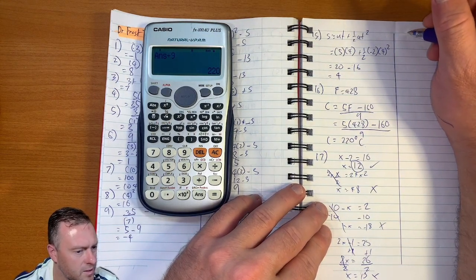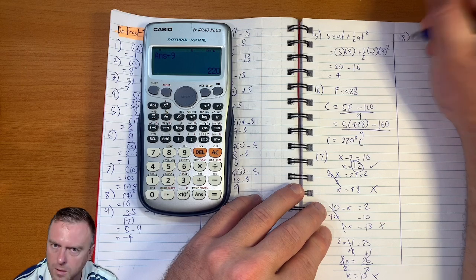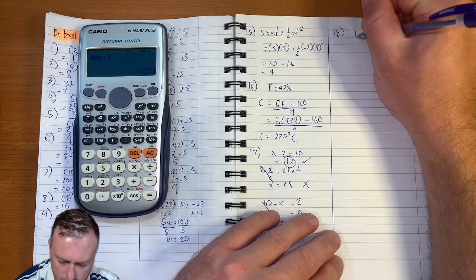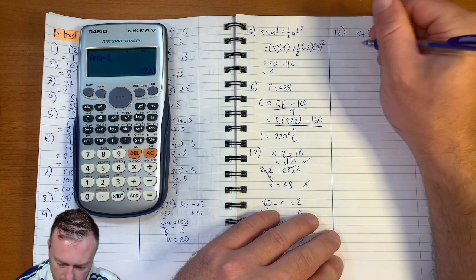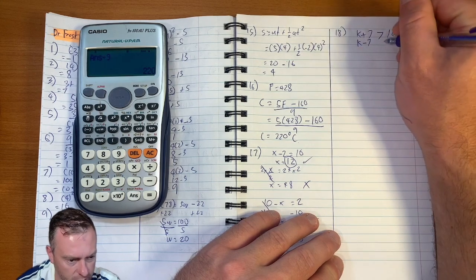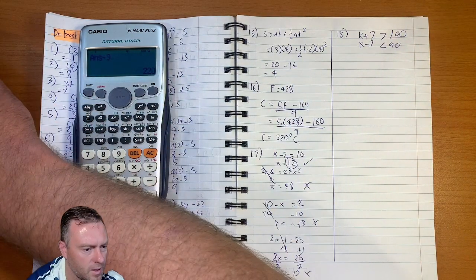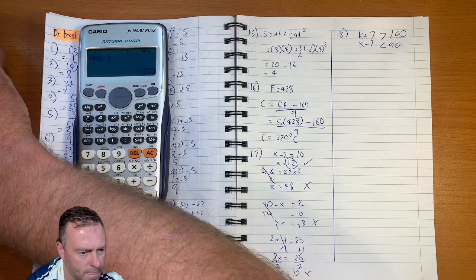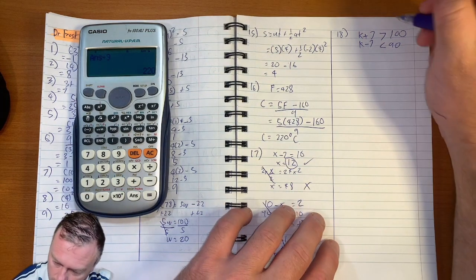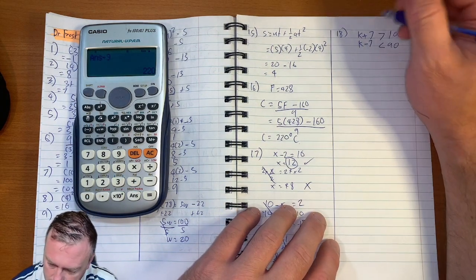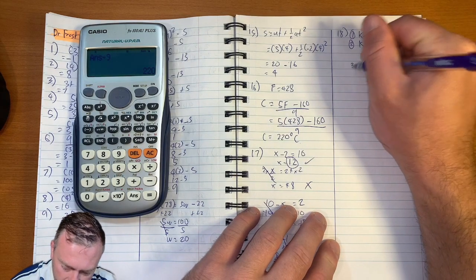18. So K stands for a whole number. K plus 7 is greater than 100. So here we go. So K plus 7 is greater than 100. And then K minus 7 is less than 90. Write out all the numbers that it could be. The K could be. So let's take away 7 from both sides. So this is equation 1. This is equation 2. So our new equation 3.